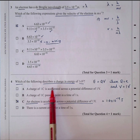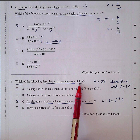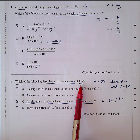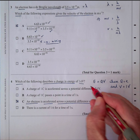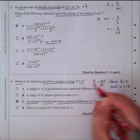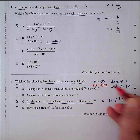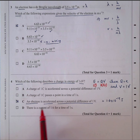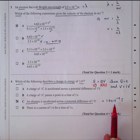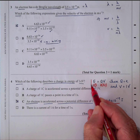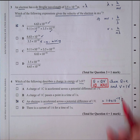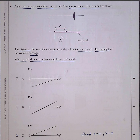Question four: which of the following describes a change in energy of one electron volt? One electron volt by definition is the energy gained by an electron accelerated through a voltage of one volt. The energy in joules equals the charge times the voltage. An electron accelerated across a potential difference of one volt gains 1.6 × 10⁻¹⁹ joules. So the answer is C — this is a known definition that comes up in the exam every year.